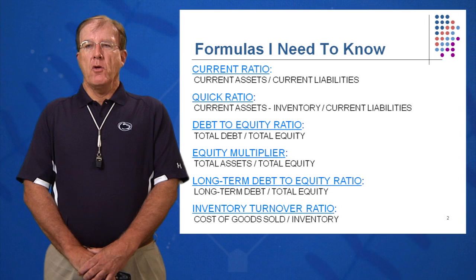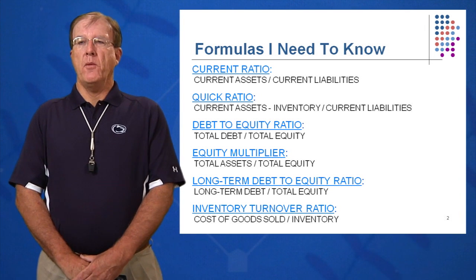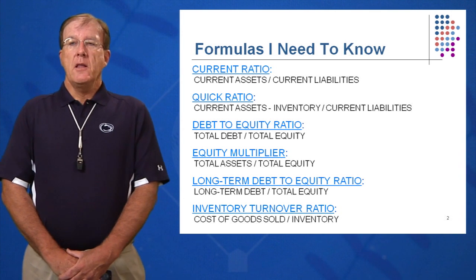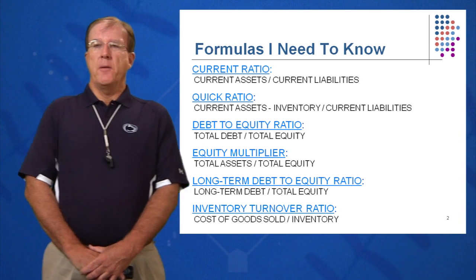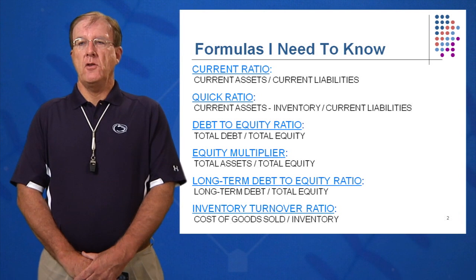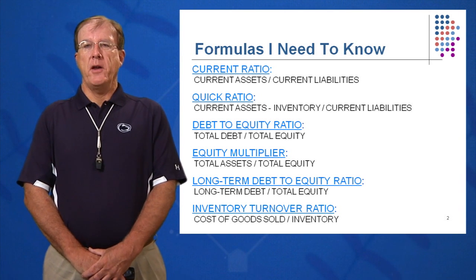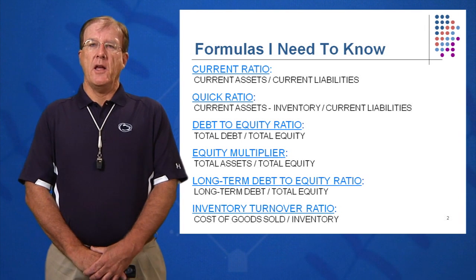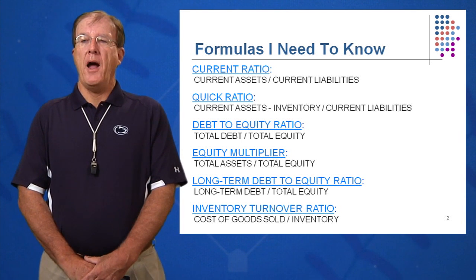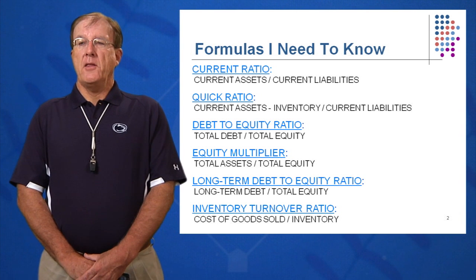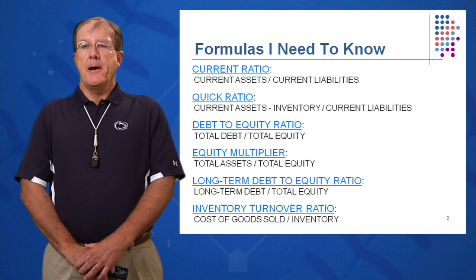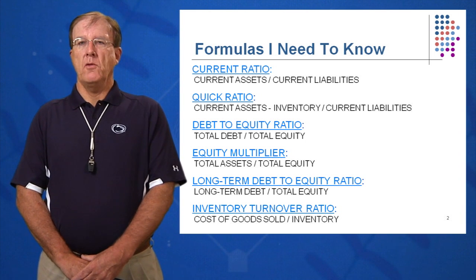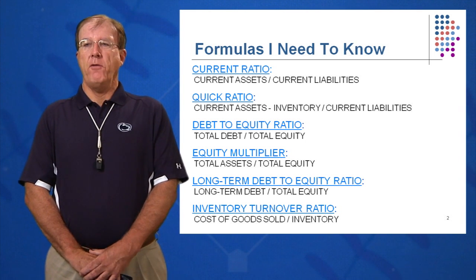We're going to break them into five categories. Short-term solvency ratios — the important ones to remember are current ratio and quick ratio. We'll go over ways to not just memorize them, but to understand them, and we'll look for mnemonics — little memory devices — to help us remember them going forward. Long-term solvency ratios: we want to look at debt-to-equity, equity multiplier, and long-term debt-to-equity. If you have the debt-to-equity ratio, you essentially get three ratios for one.